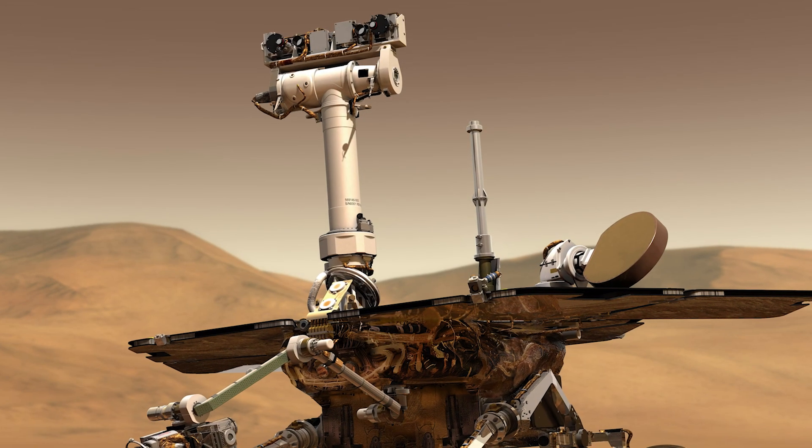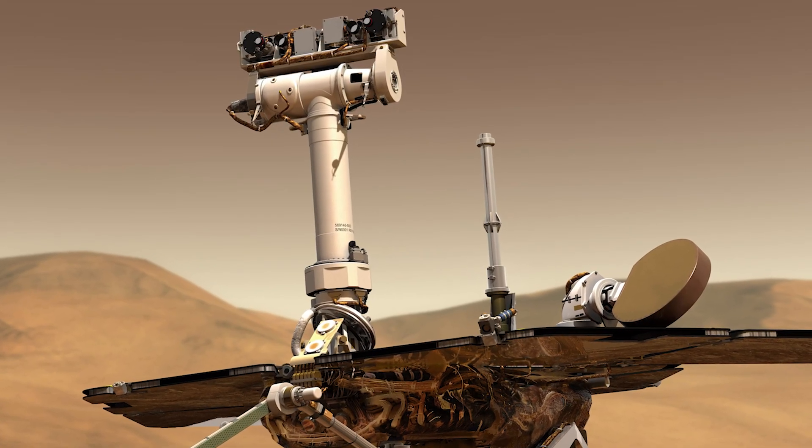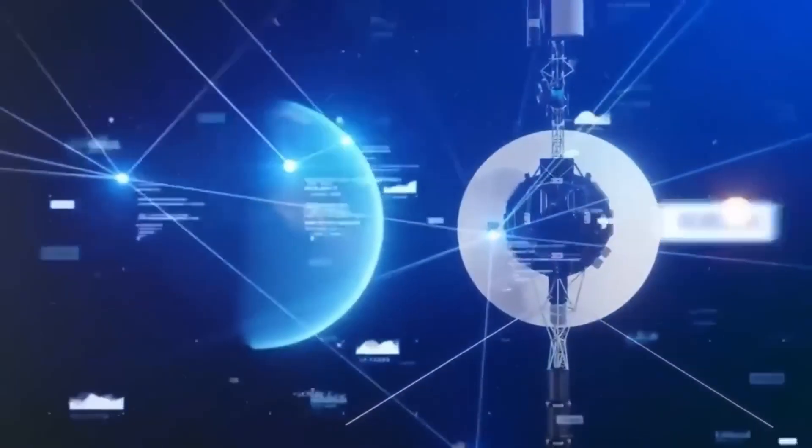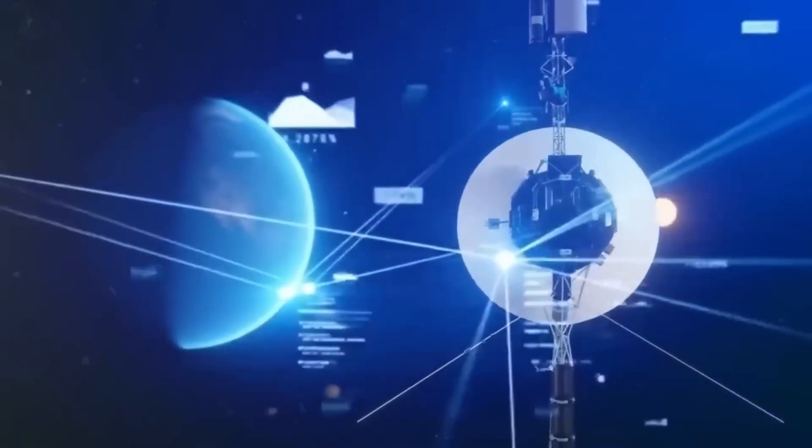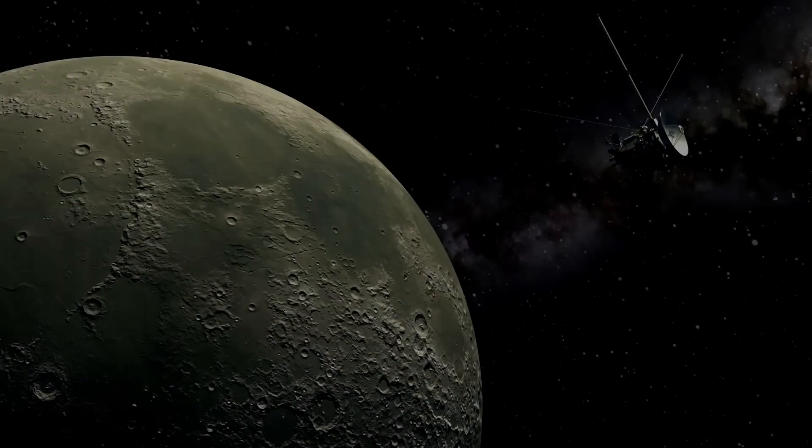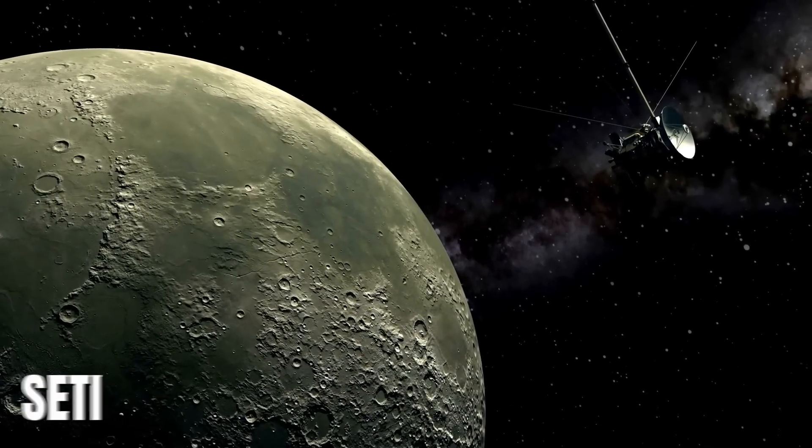In Mars rover images, AI has found rock formations suggesting past water in regions we thought were dry. In Kepler data, algorithms have identified dozens of potential exoplanets that the original analysis missed.